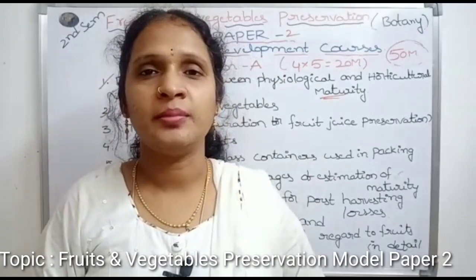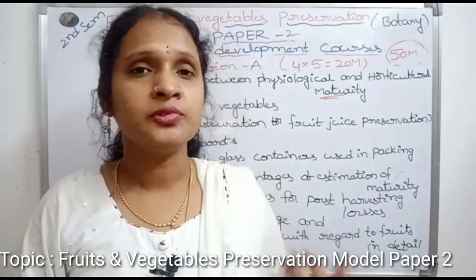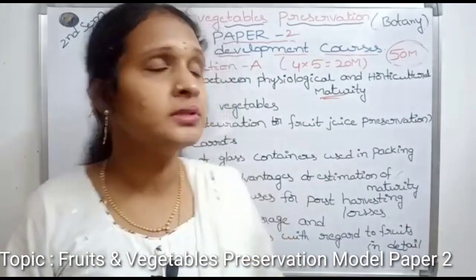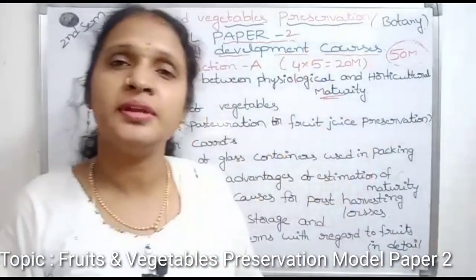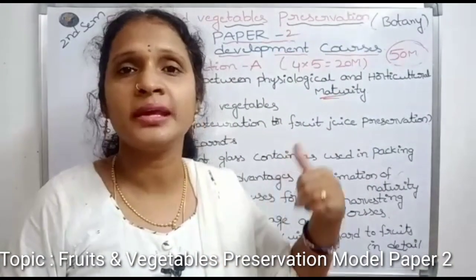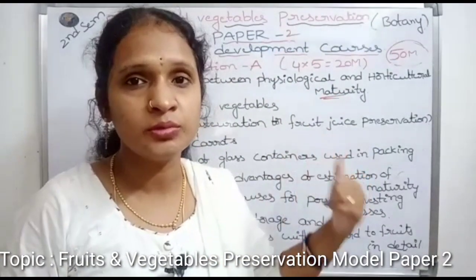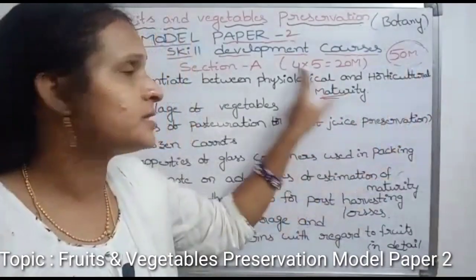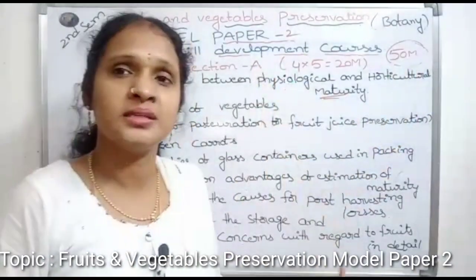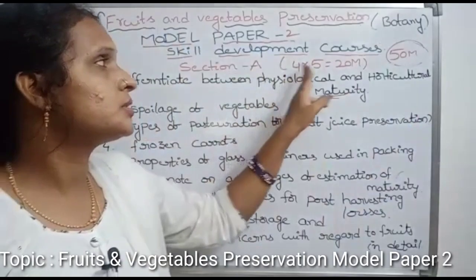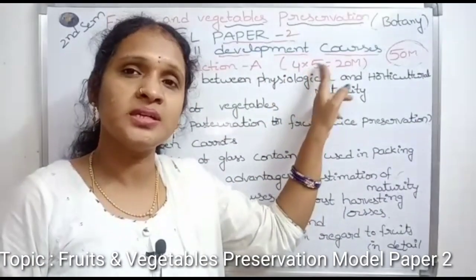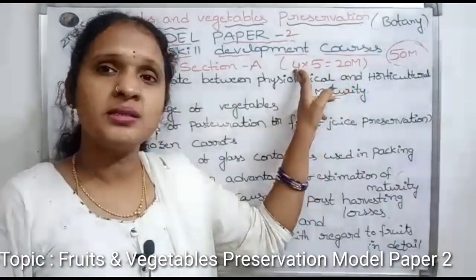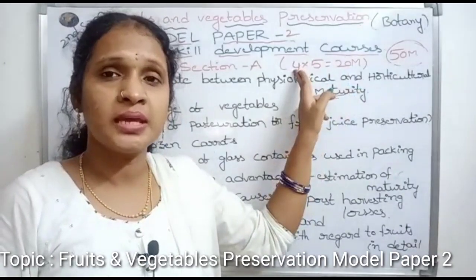Hi, good morning. In this video we will discuss the Fruits and Vegetables Skill Development Courses Model Paper 2. In the previous video we discussed Model Paper 1. In total we have 50 marks and two sections — Section A and Section B. Section A has short questions, each question carries 5 marks, four fives are 25 marks, so answer any four questions from the following eight questions.